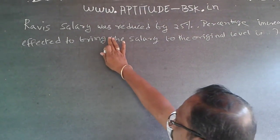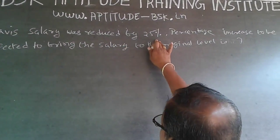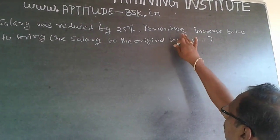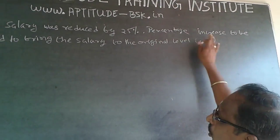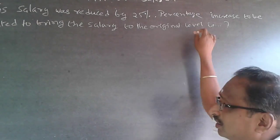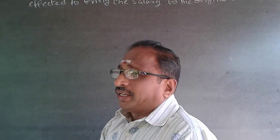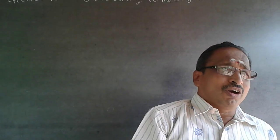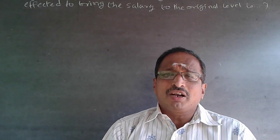The question is: Ravi's salary was reduced by twenty percent. What percentage increase is needed to bring the salary to the original level? This is a quantitative question on percentage, a simple problem, but many of my students have made mistakes in this.